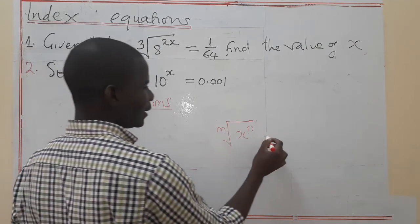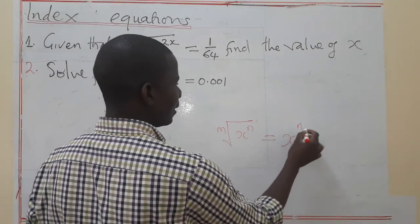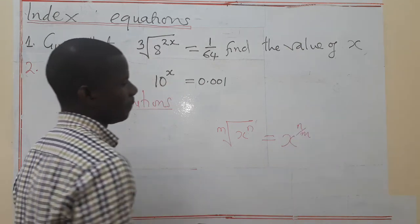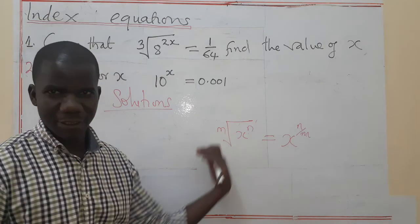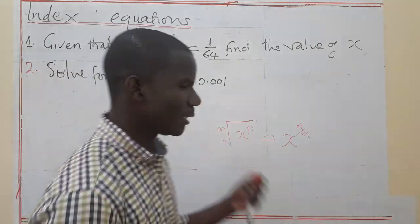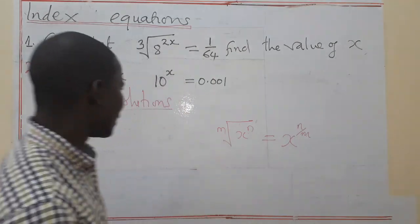You need to write it as X^(N/M). And then this can also be written in the reverse form. So this is what we are supposed to do.